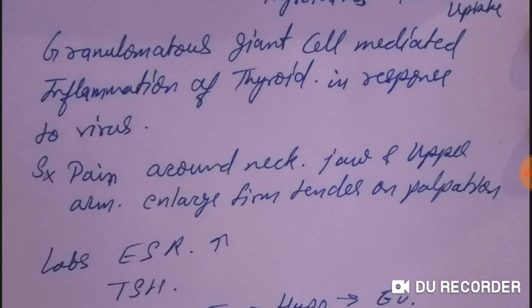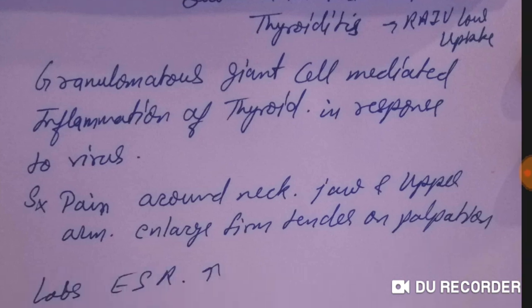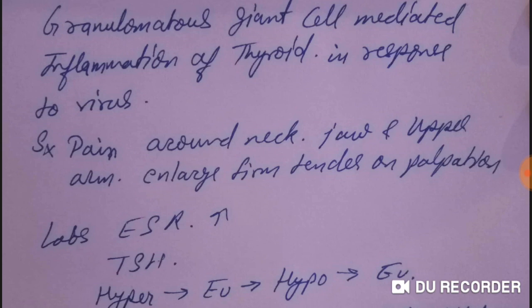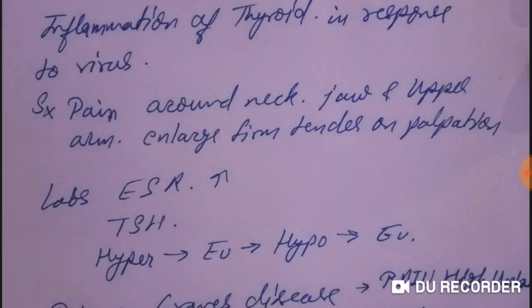Symptoms include pain around the neck, jaw, upper arm, and near the thyroid. The thyroid is enlarged, firm, and tender on palpation. Subacute de Quervain's thyroiditis is a painful condition. Other painful conditions include radiation and trauma. There is also dysphagia and dyspnea.